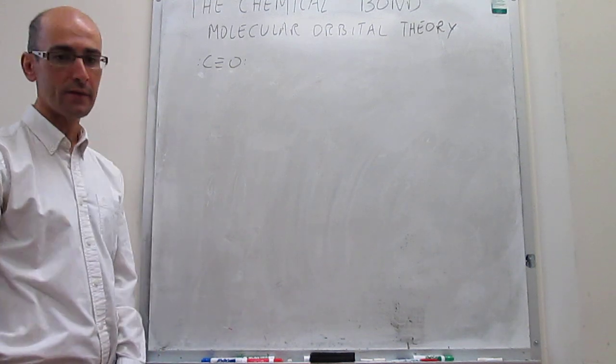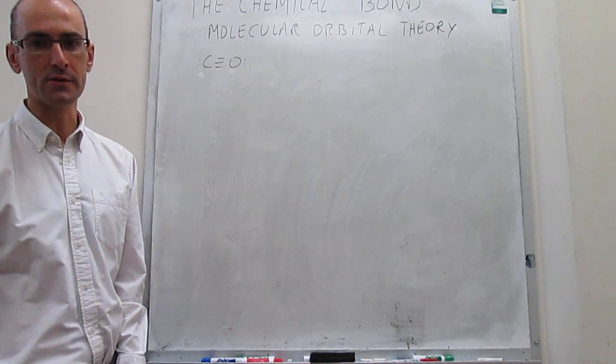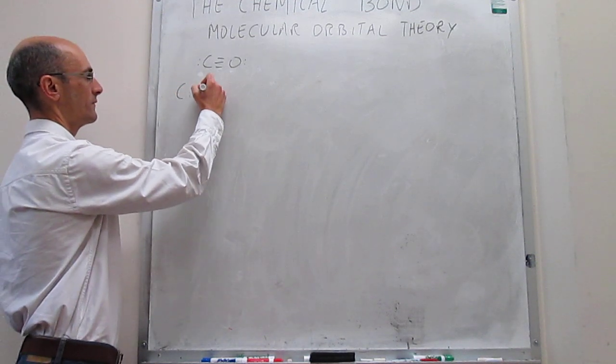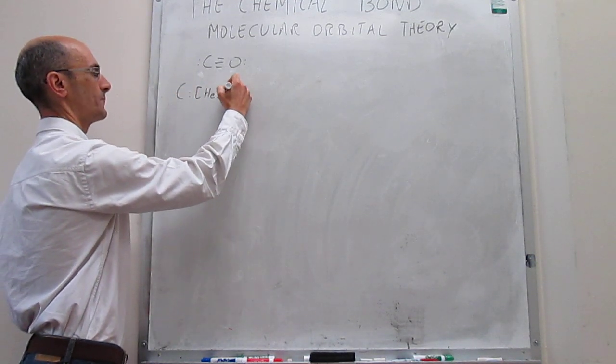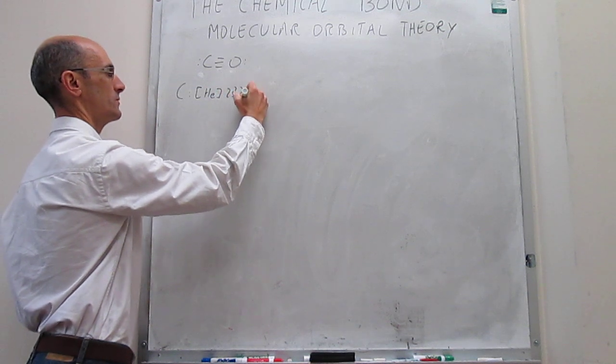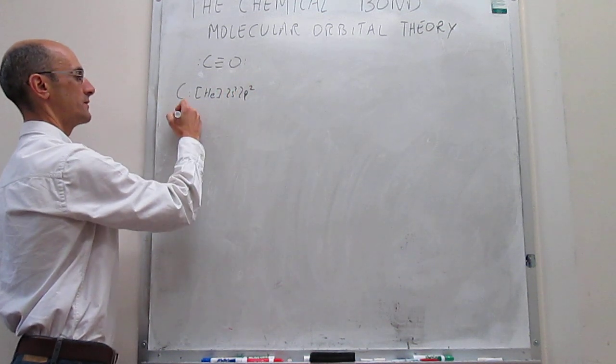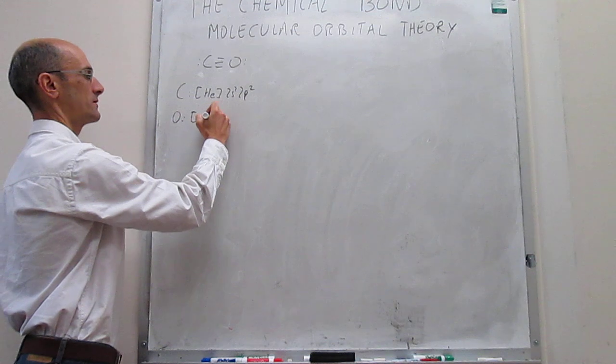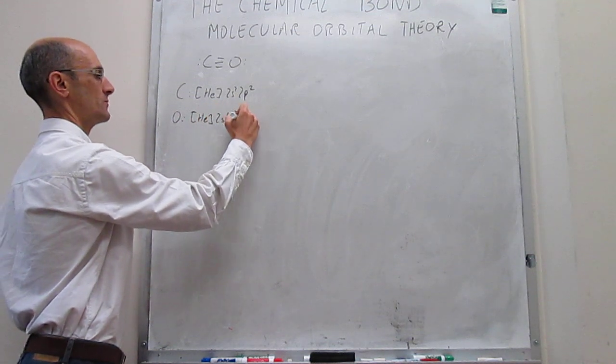The first thing that we think about is the electronic configurations of the atoms. The carbon electronic configuration is helium 2s2 2p2, and then for oxygen we have two more electrons 2s2 2p4.